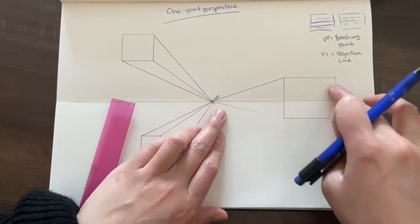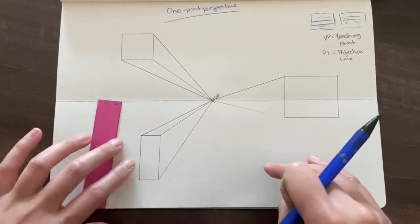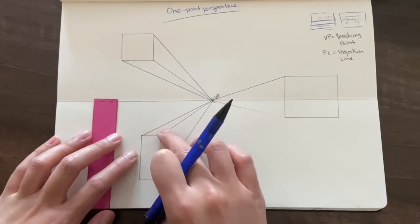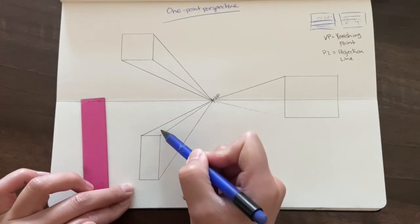And because this is on the horizon, I won't be able to see the shape that's on the top, for instance, like this shape, because it's below the horizon line, I can see what's on top of here.